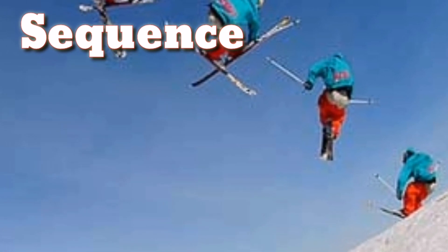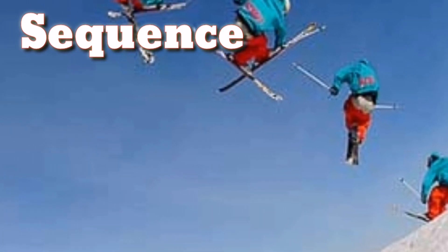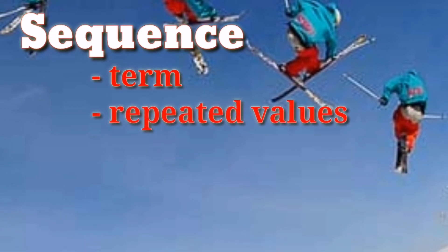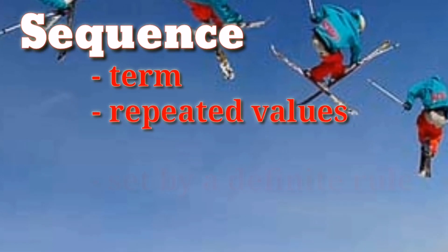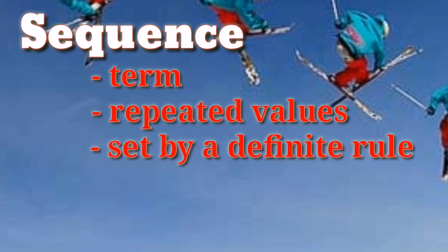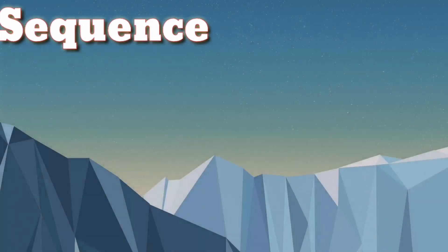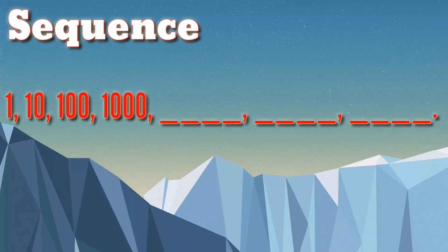Again, a sequence is an ordered list of numbers called terms that may have repeated values. The arrangement of these terms is set by a definite rule. Now, let's analyze the given sequence for each rule and identify the next 3 terms.